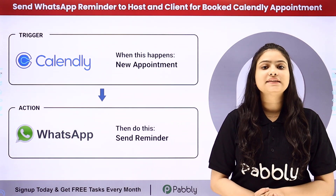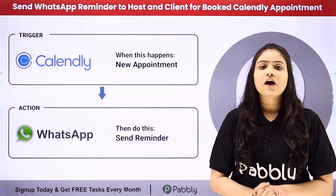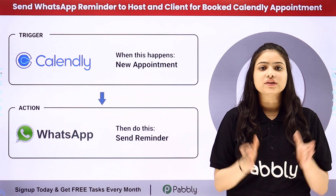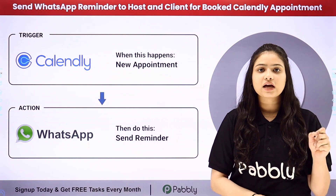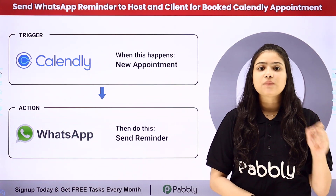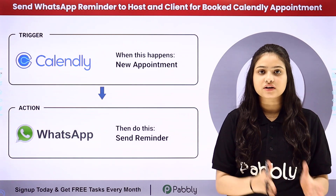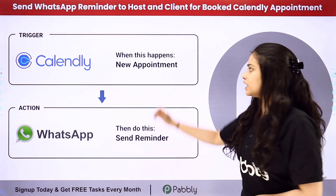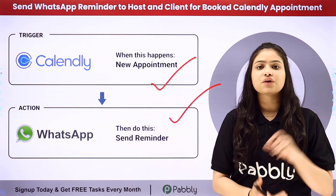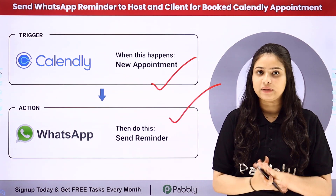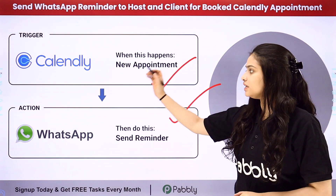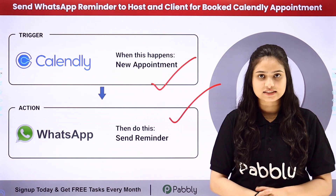To automate this entire process, we will set up a connection between Calendly and WhatsApp without any coding or programming skills, using Pably Connect, which is an amazing automation and integration software. Pably Connect works on two principles: Trigger and Action. In the Trigger we are going to take Calendly, and in Action we will use WhatsApp Cloud API to send WhatsApp messages with templates.